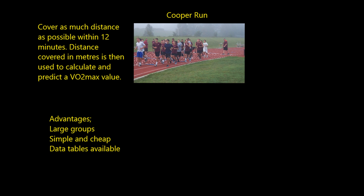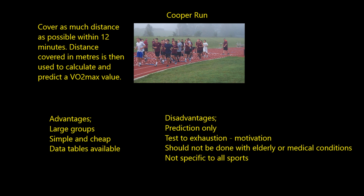The disadvantages — and we're going to see some overlap here. The big problem with the Cooper run is that it's a prediction only. We are using metres to predict a VO2max, and that's not as accurate as direct measurement. It also shares the exhaustion issue with gas analysis — you've got to run as far as you can in 12 minutes, so motivation can be an issue. Again, it should not be done with elderly people or those with medical conditions, as running 12 minutes nonstop can create problems. And the big disadvantage is it's not specific to all sports — it's fine for runners, but not a good indicator for rowers or cyclists who don't normally run.